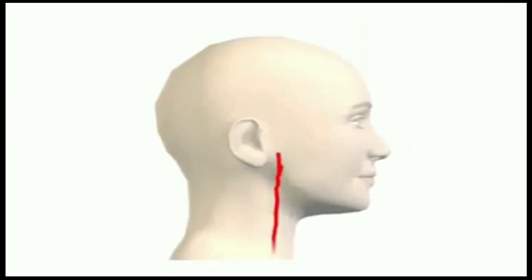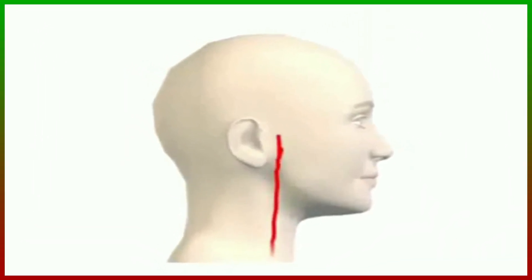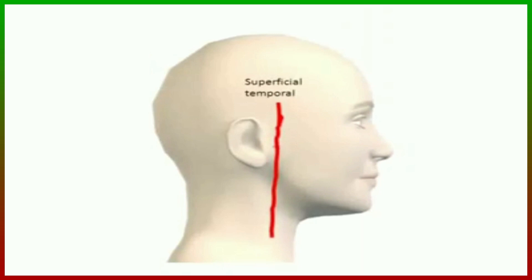As the external carotid artery travels upward, it terminates as two branches: the maxillary artery and the superficial temporal artery.